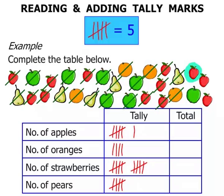Another apple, another strawberry, and then the final strawberry. Terrific — so now we've completed the tally column.